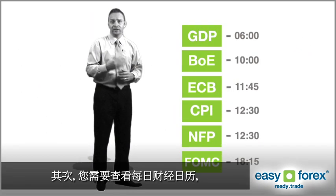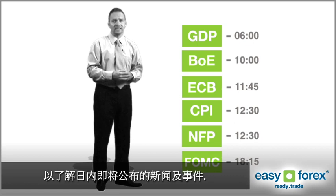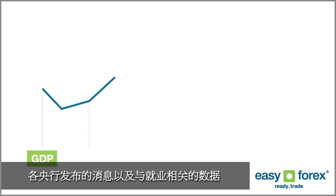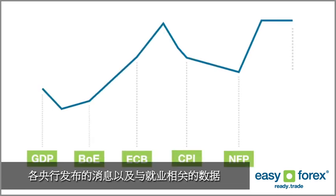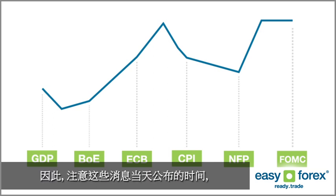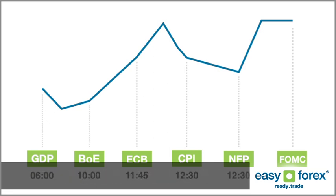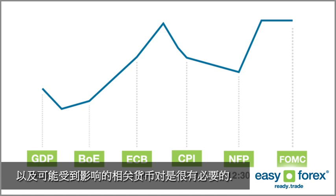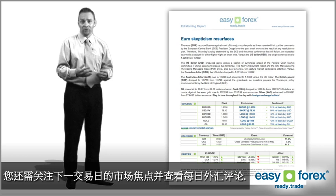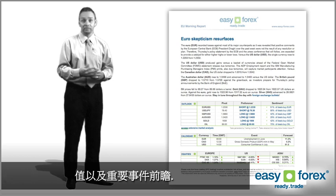Secondly, you should check the economic calendar to see what news and announcements are planned for the day. Currency rates tend to react to economic reports as they're their main barometer of a country's economic health. Announcements from central banks and those relating to employment may provoke the most market volatility, so it is important to note the time of day, the scheduled releases, and the currency pairs that may be most impacted. You should also review the daily outlooks which summarise the day ahead and give indications of market sentiment.